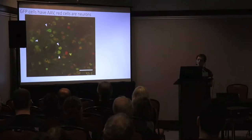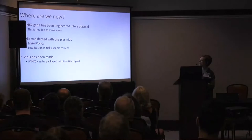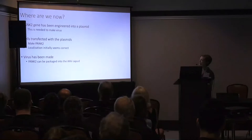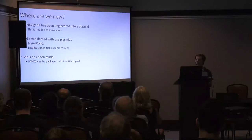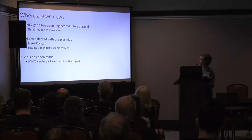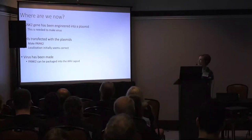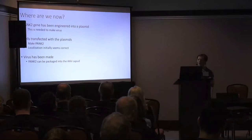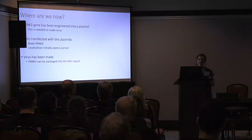Right now I have the PANK2 gene put into a plasmid, which was necessary to make the virus. We can transfect cells with this plasmid — a faster way of getting DNA into cells in a culture dish, though we can't do it in people. I've found that when I put that coding sequence in, cells can make PANK2, the localization seems correct. I've made virus and found that PANK2 can be packaged in it. When I get back to lab next week, I'll be infecting cells with it and making sure the protein is made correctly and localized correctly, and then from there we can inject mice.